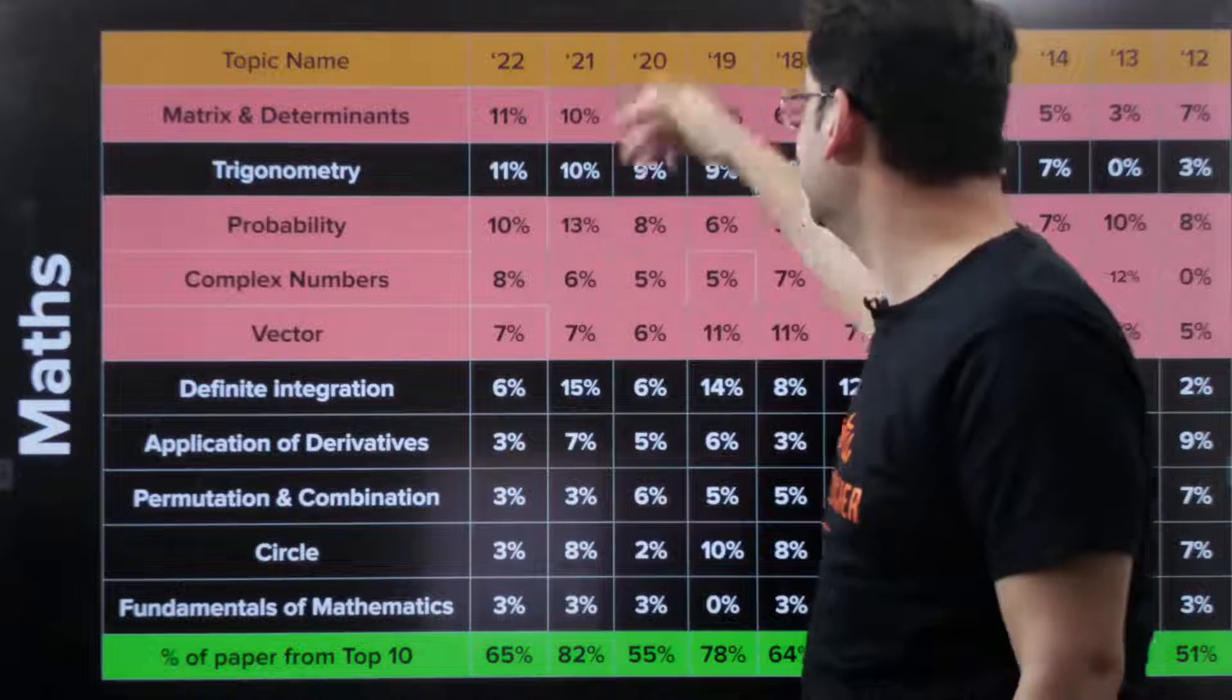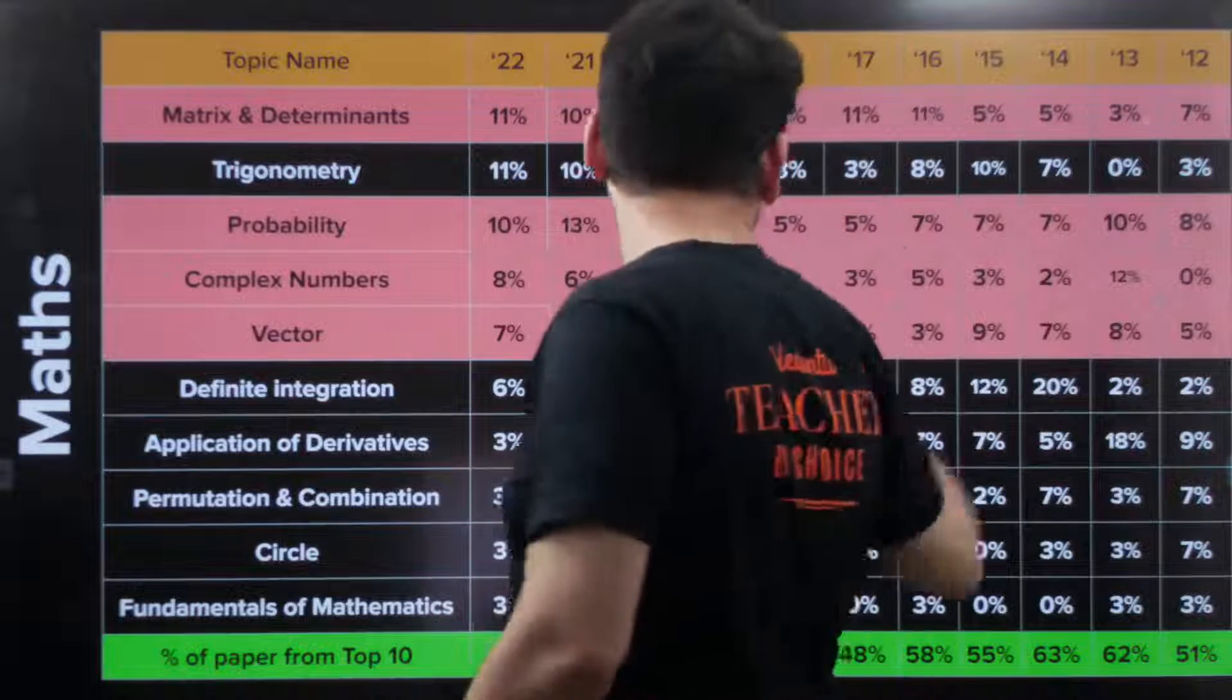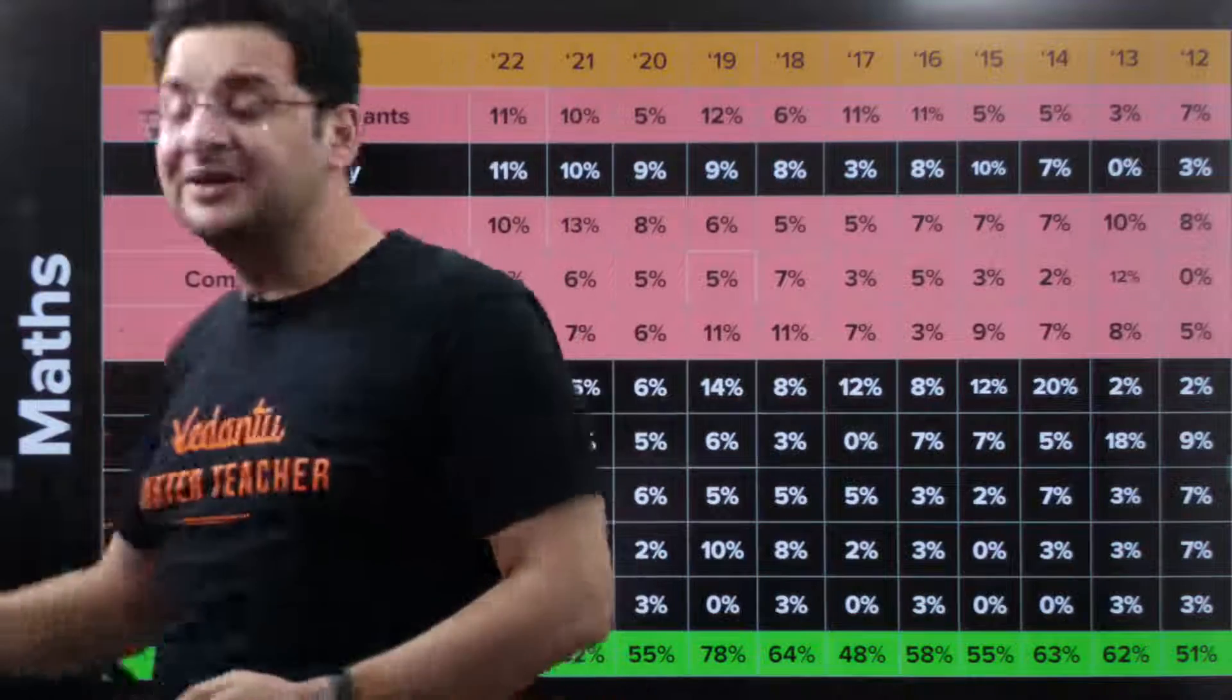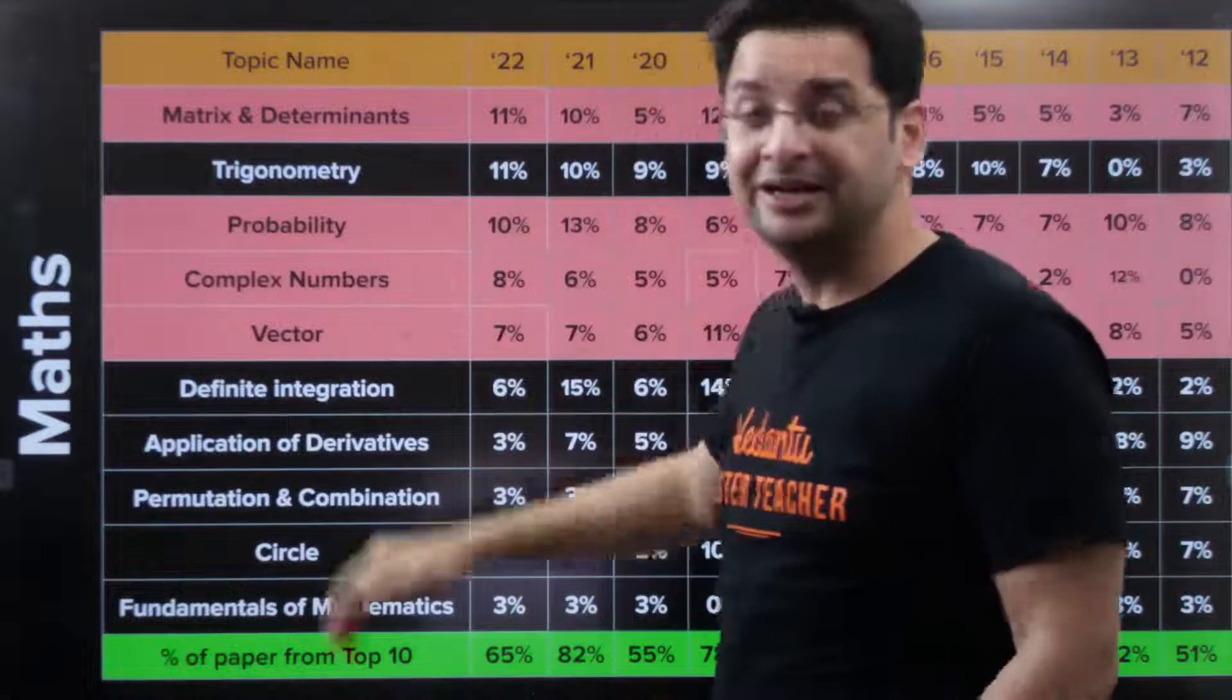Trigonometry was 11 percent last year, 10 percent before. Normally it is always above average weightage. Barring 2017 and 2012, which was 3 percent in both cases. Otherwise, trigonometry has been having a heavy, heavy weightage.